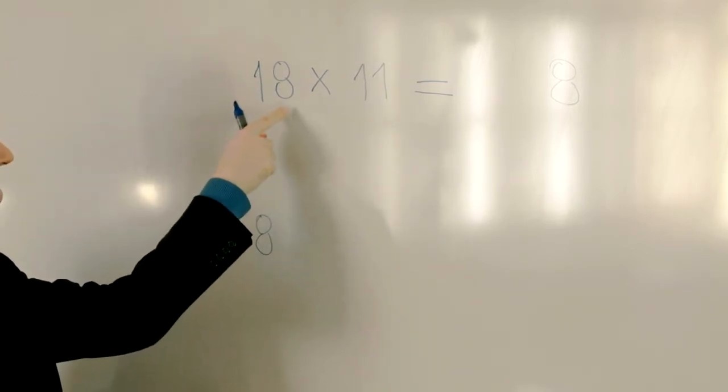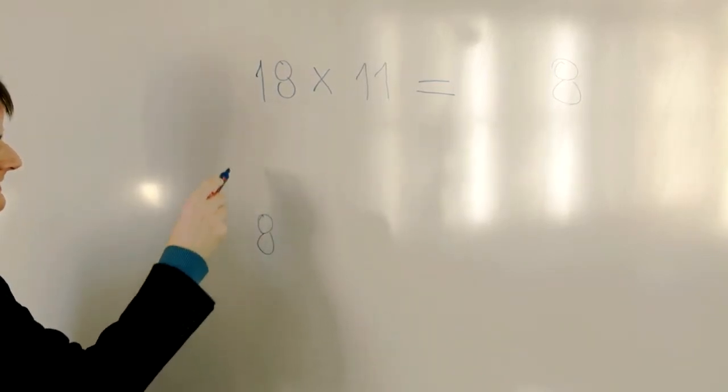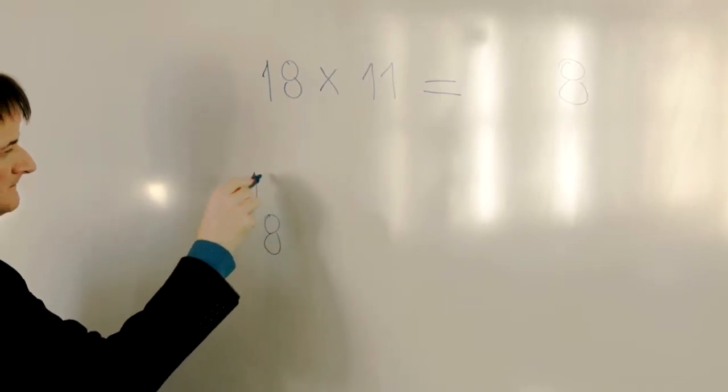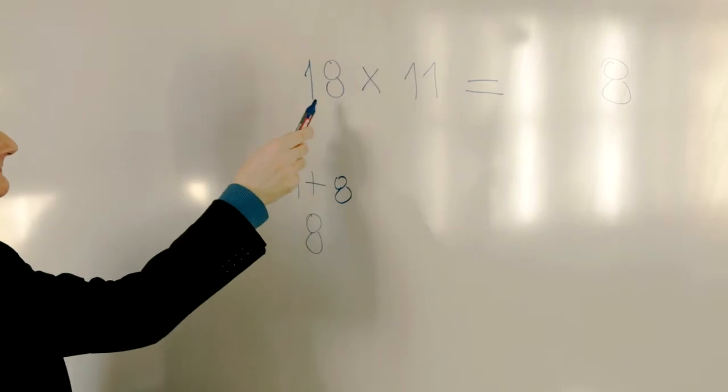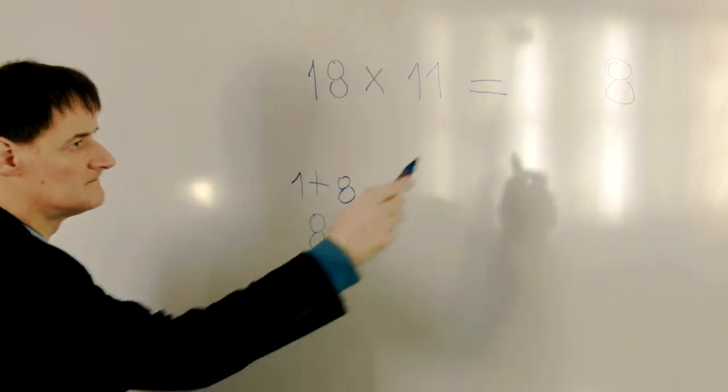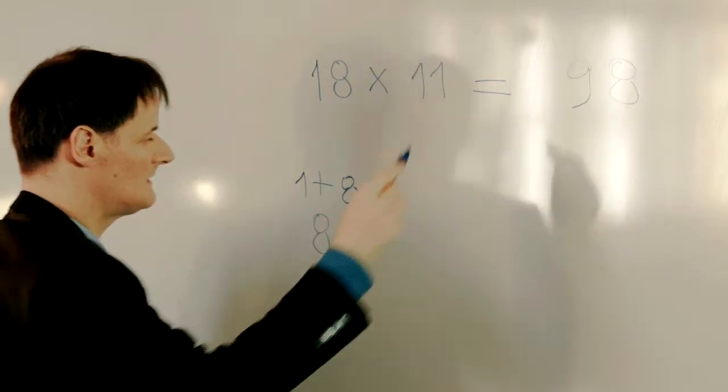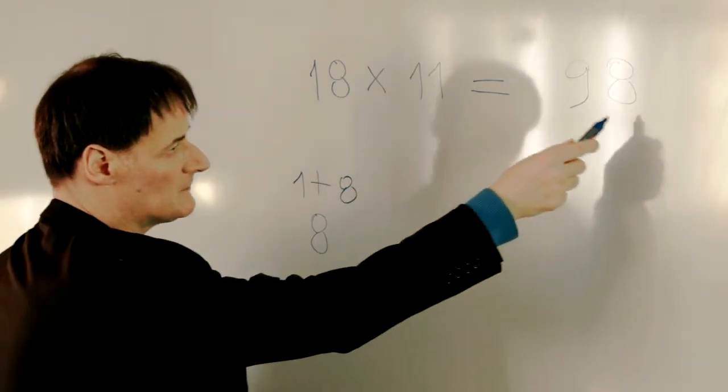Then add the two digits in the number 18 together. That means 1 plus 8 equals 9.